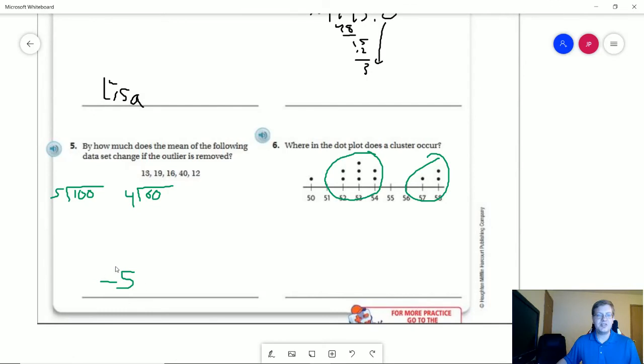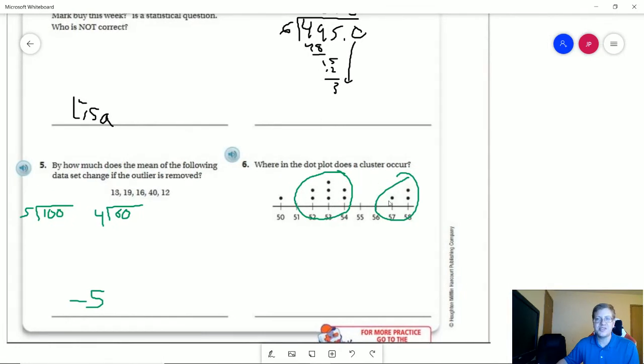Number 5, our value is going to change by negative 5 if we remove the outlier. To start with, we take all five of these numbers, we would get the total 100, and then divide by 5 for a total of 25 for the mean. If we do 60 divided by 4, the mean drops down to 50 by removing that outlier. So our mean would change by lowering it by 5.